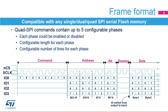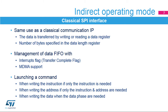The Quad SPI Memory Interface offers high flexibility in frame format configuration. This flexibility allows it to address any serial flash memory. Users can enable or disable each of the five phases and configure the length of each phase, as well as the number of lines used for each phase.